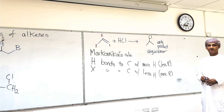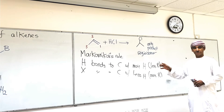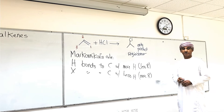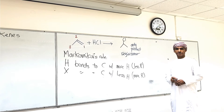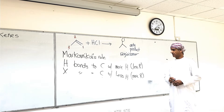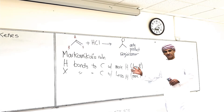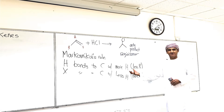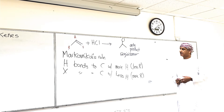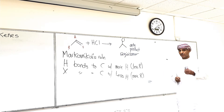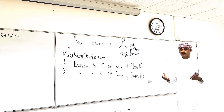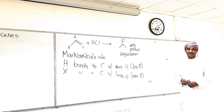This is Markovnikov's rule — an observation that upon addition of HX to alkenes, H of HX bonds to carbon with more hydrogens and X bonds to carbon with less hydrogens. An example is the reaction of propene with HCl. This observation has an explanation: the fact that H bonds to carbon one and Cl bonds to carbon two is not random. We explain this by looking at the mechanism of the reaction.